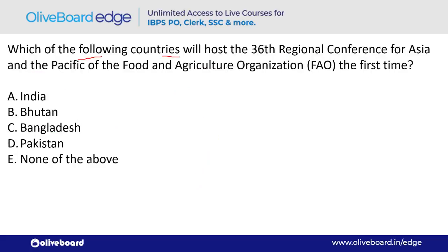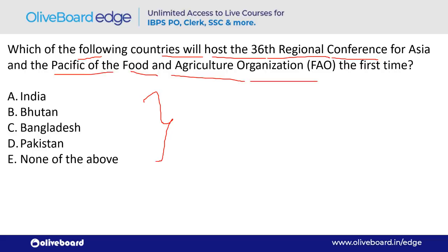Which country will host the 36th Regional Conference for Asia and the Pacific of the Food and Agriculture Organization (FAO) for the first time? The answer is Bangladesh — option C. FAO's headquarter is in Rome, Italy.